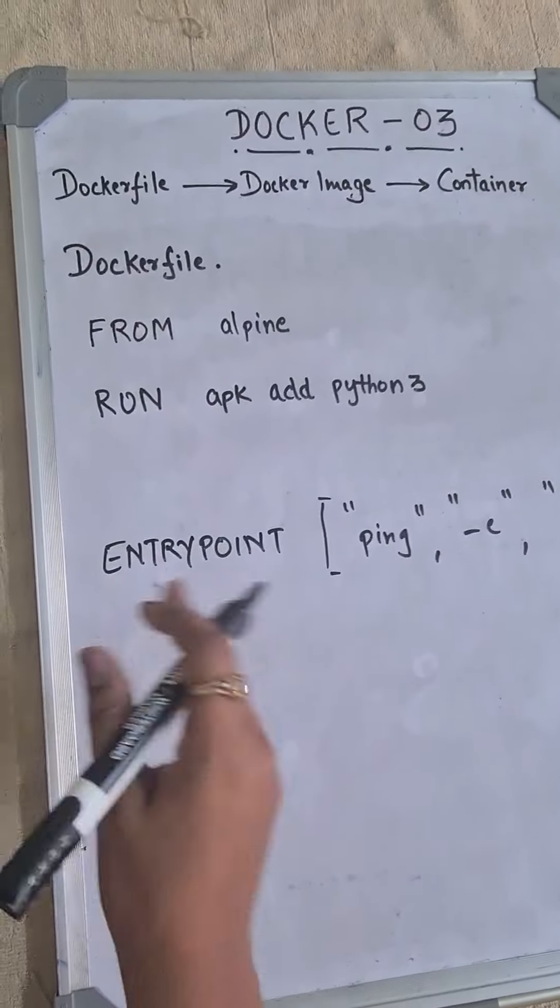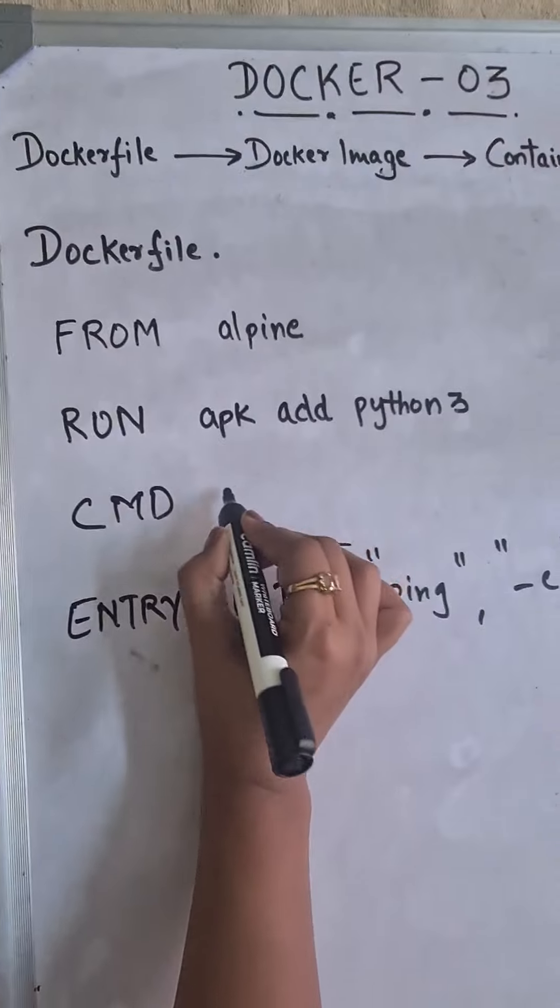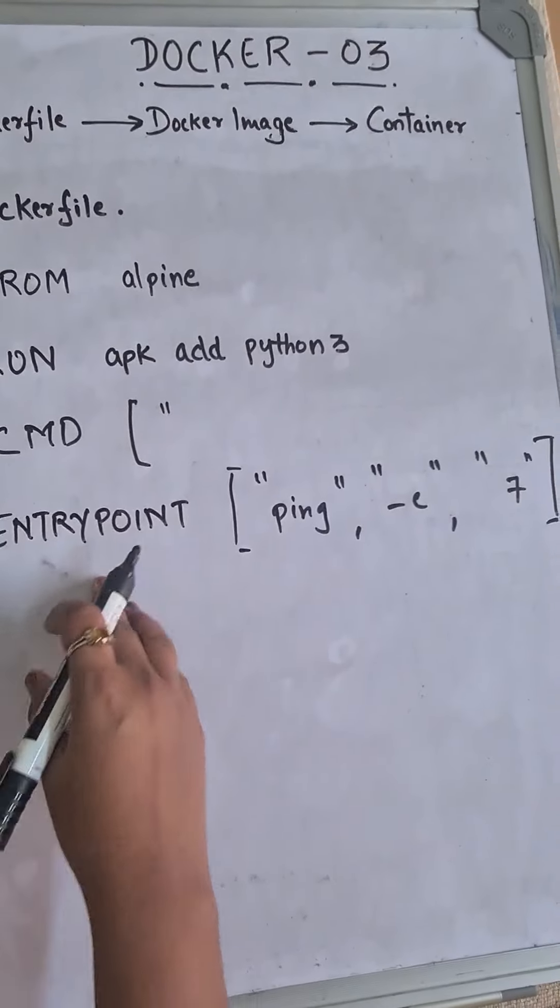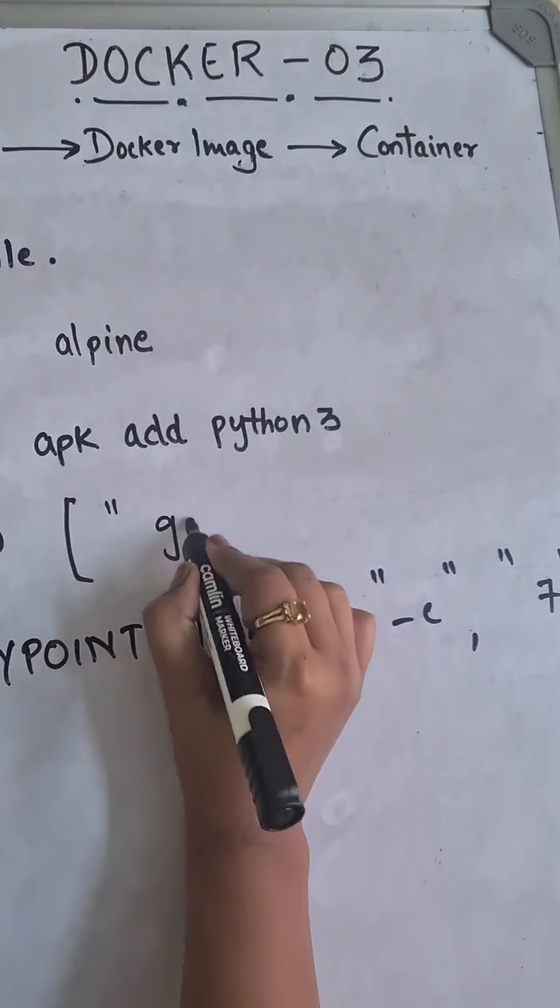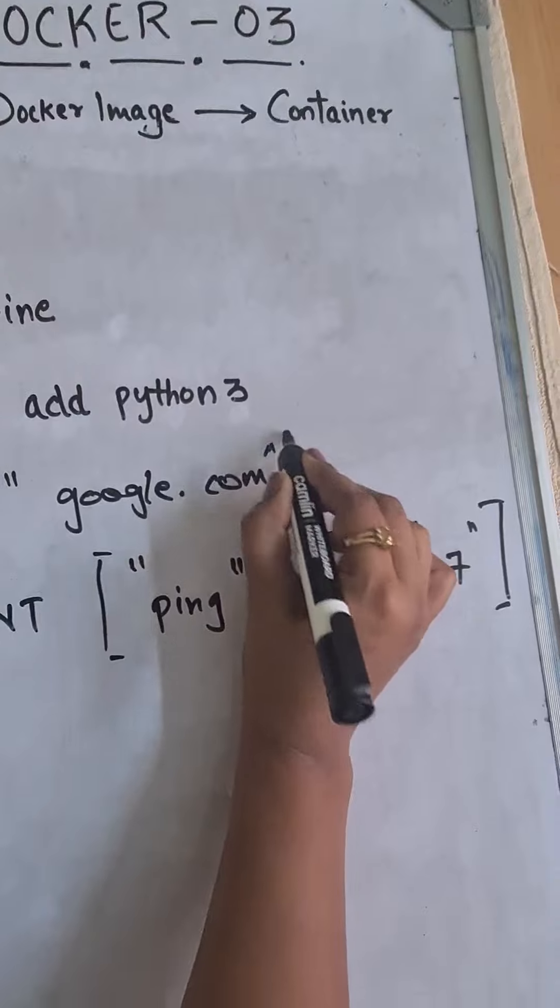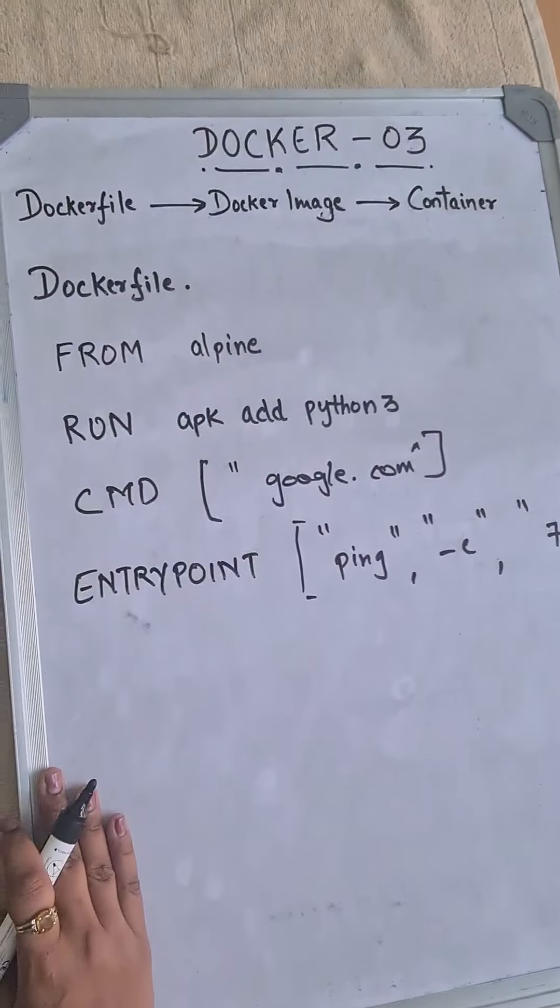And that has been passed using CMD. And now here I want the argument that should be passed to ENTRYPOINT to be google.com. So this will actually ping google.com.